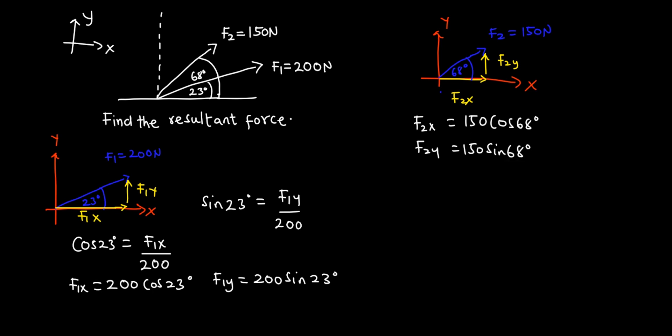Looking at this, all the forces are in the first quadrant, so both the x and y components will be positive. Now we are going to add all the x components together and add all the y components together. The resultant force R equals F1x plus F2x for the x component.